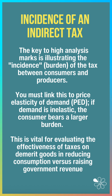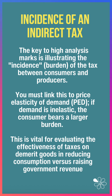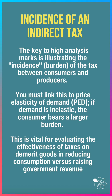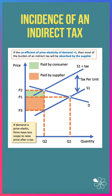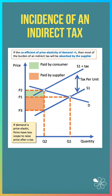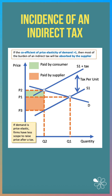This diagram is vital for evaluating the impact of taxes on demerit goods, for example in reducing consumption versus raising government revenue. Here's a diagram where demand is relatively price elastic and we have an indirect tax imposed, and you can see that most of the burden here is paid for by the supplier.